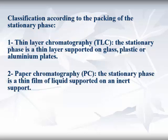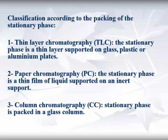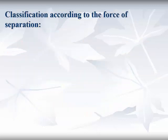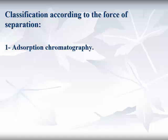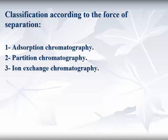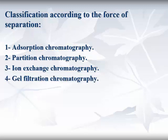In partition chromatography, the stationary phase is a thin film of liquid supported on an inert support. In column chromatography, the stationary phase is packed in a glass column. Classifications according to the separation mechanism include: adsorption chromatography, partition chromatography, ion exchange chromatography, and gel permeation chromatography.